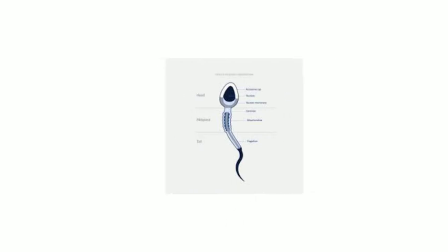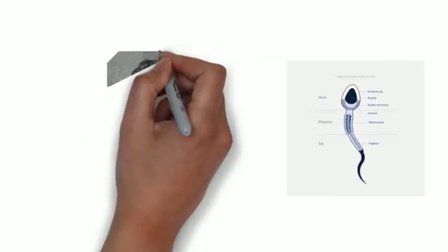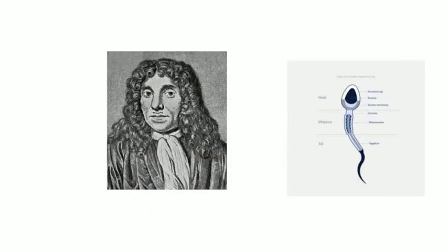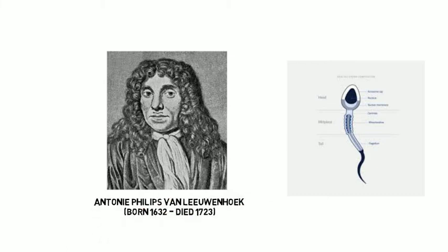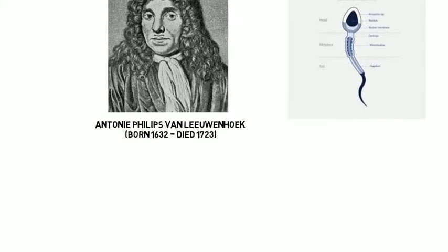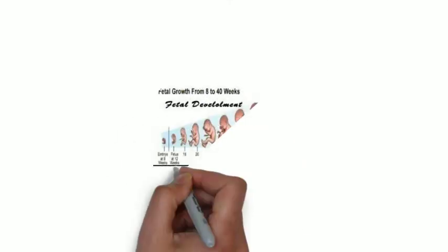The first study of male sperm took place in 1677 by Anthony Phillips Van Leeuwenhoek, born 1632, died 1723. Since then, embryology has advanced.